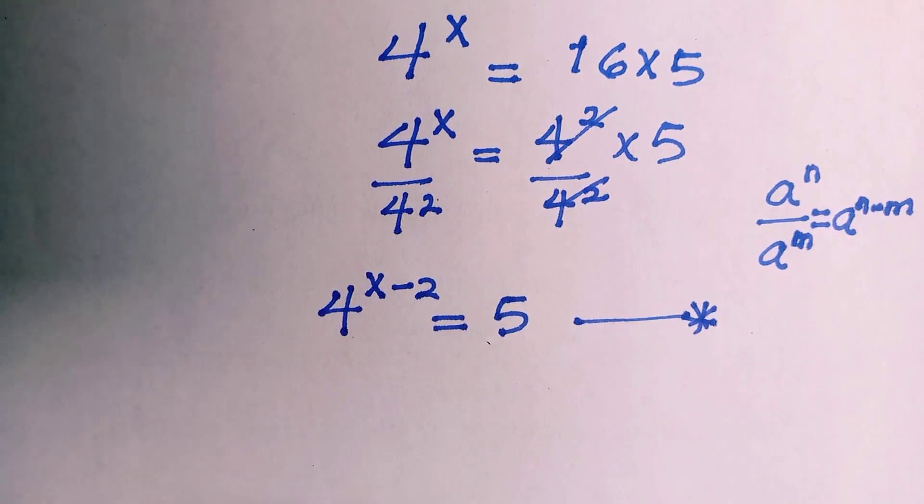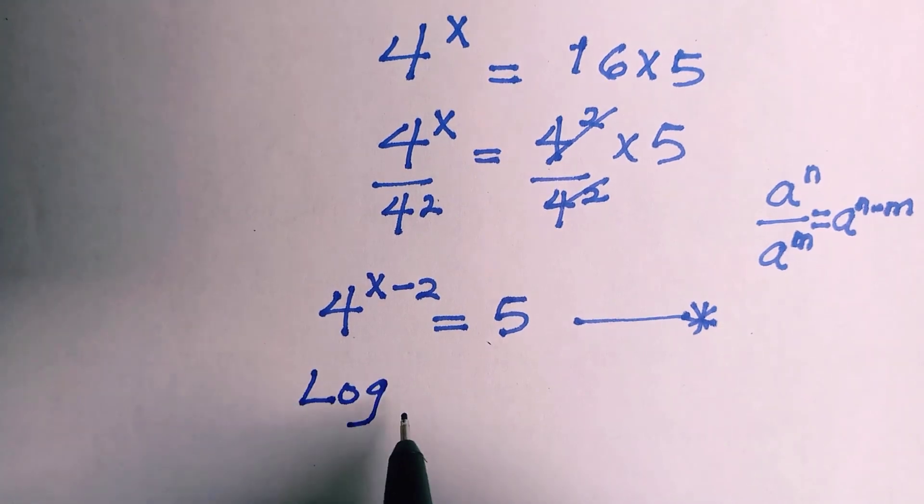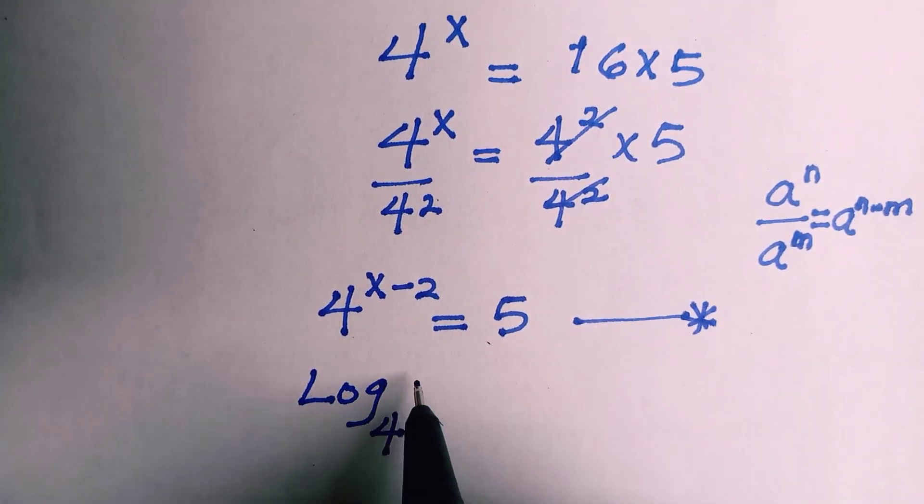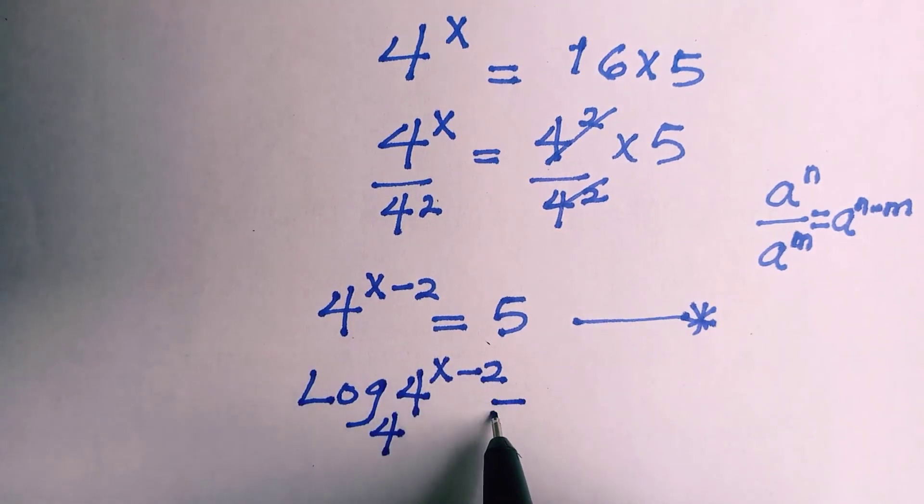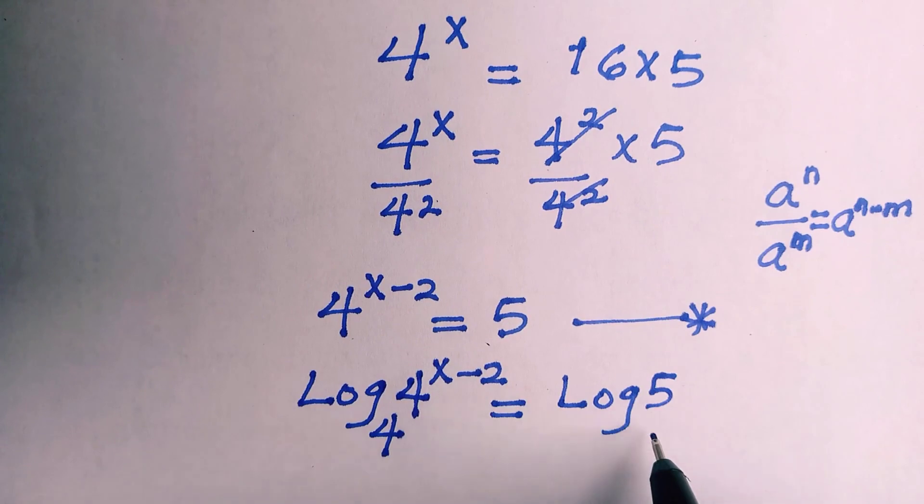And the best thing to do is by introducing the log of base 4. Taking log of base 4, I will have log 4 to the power of x minus 2 equals log 5 base 4.